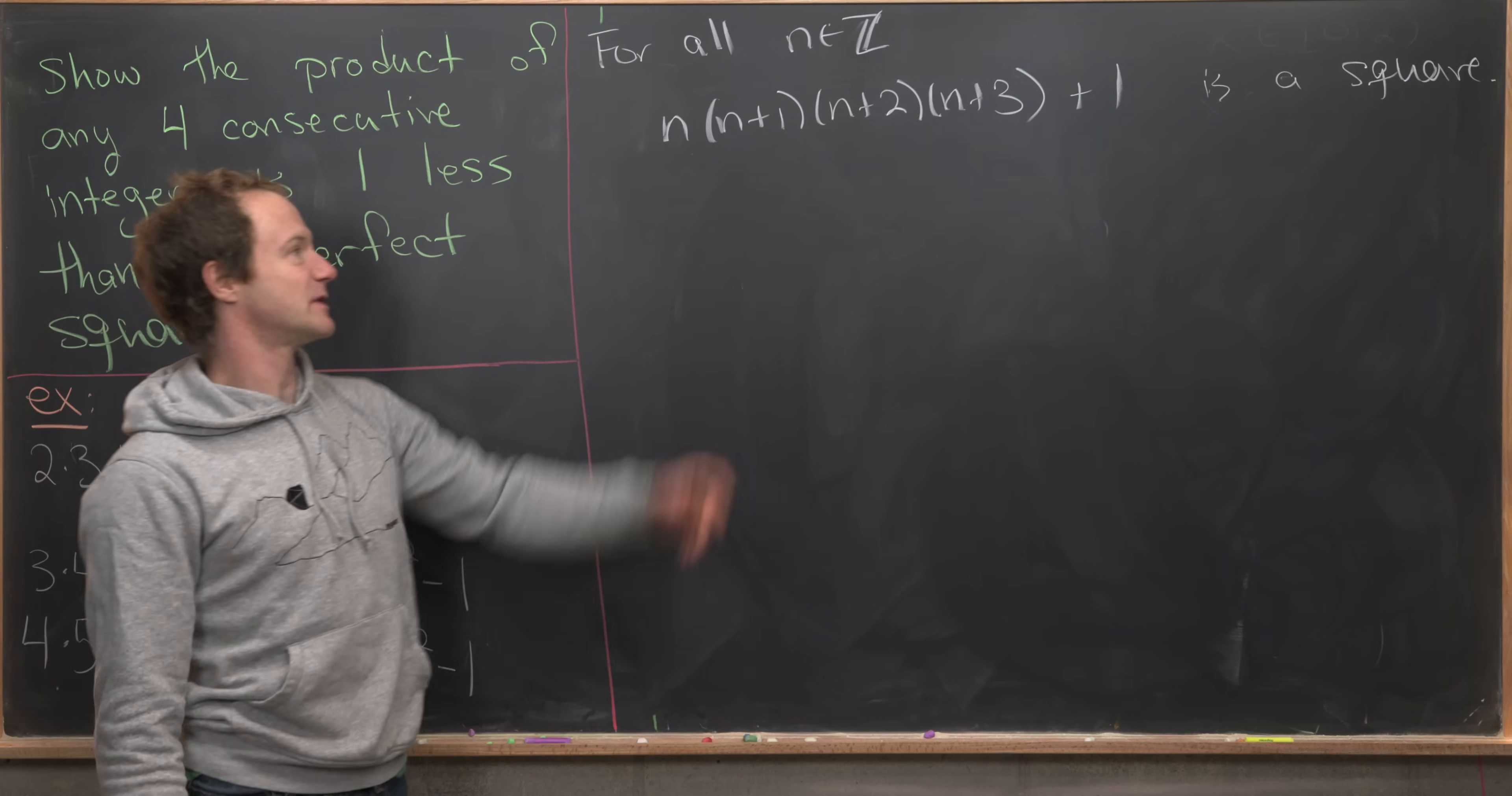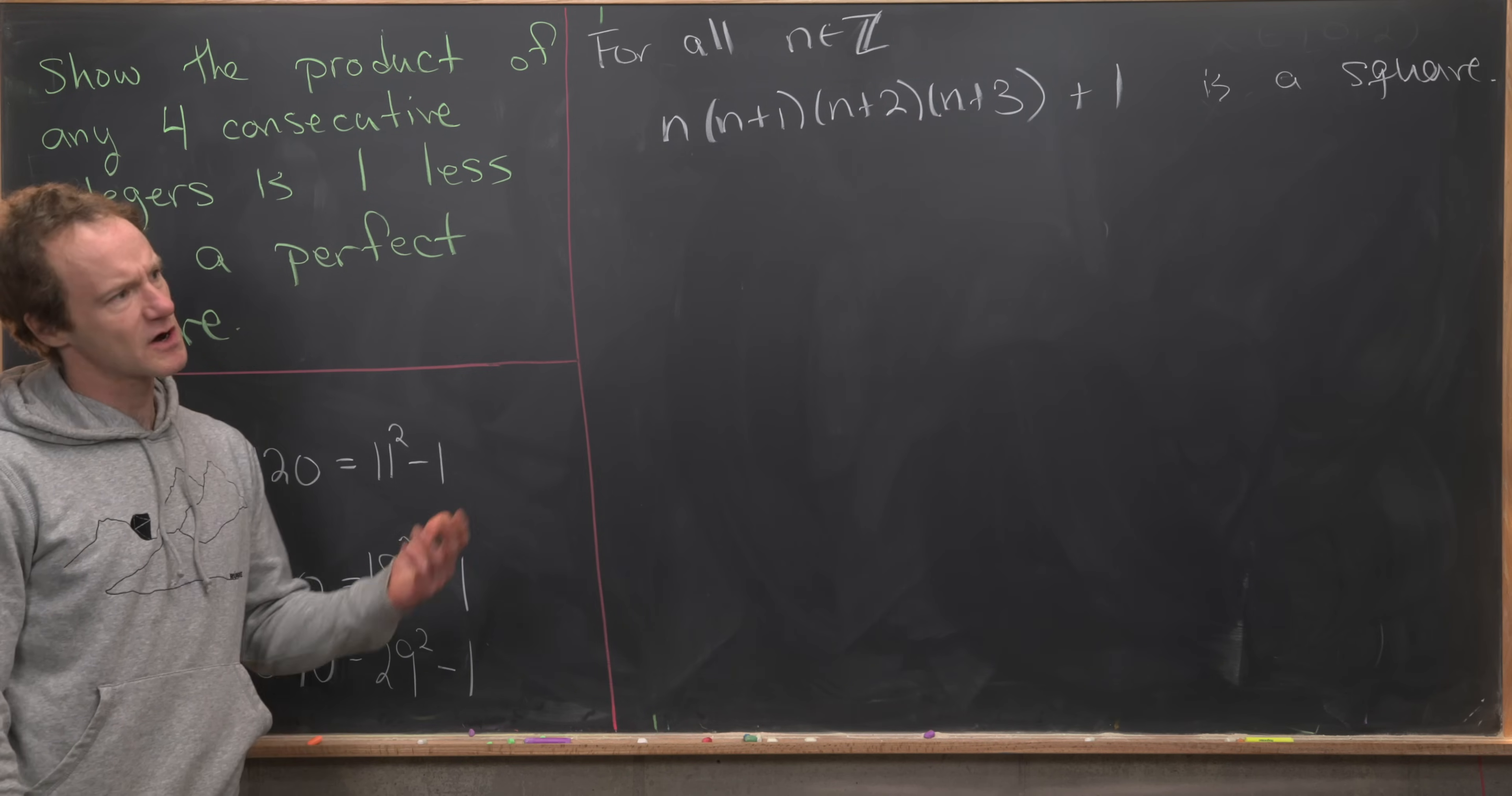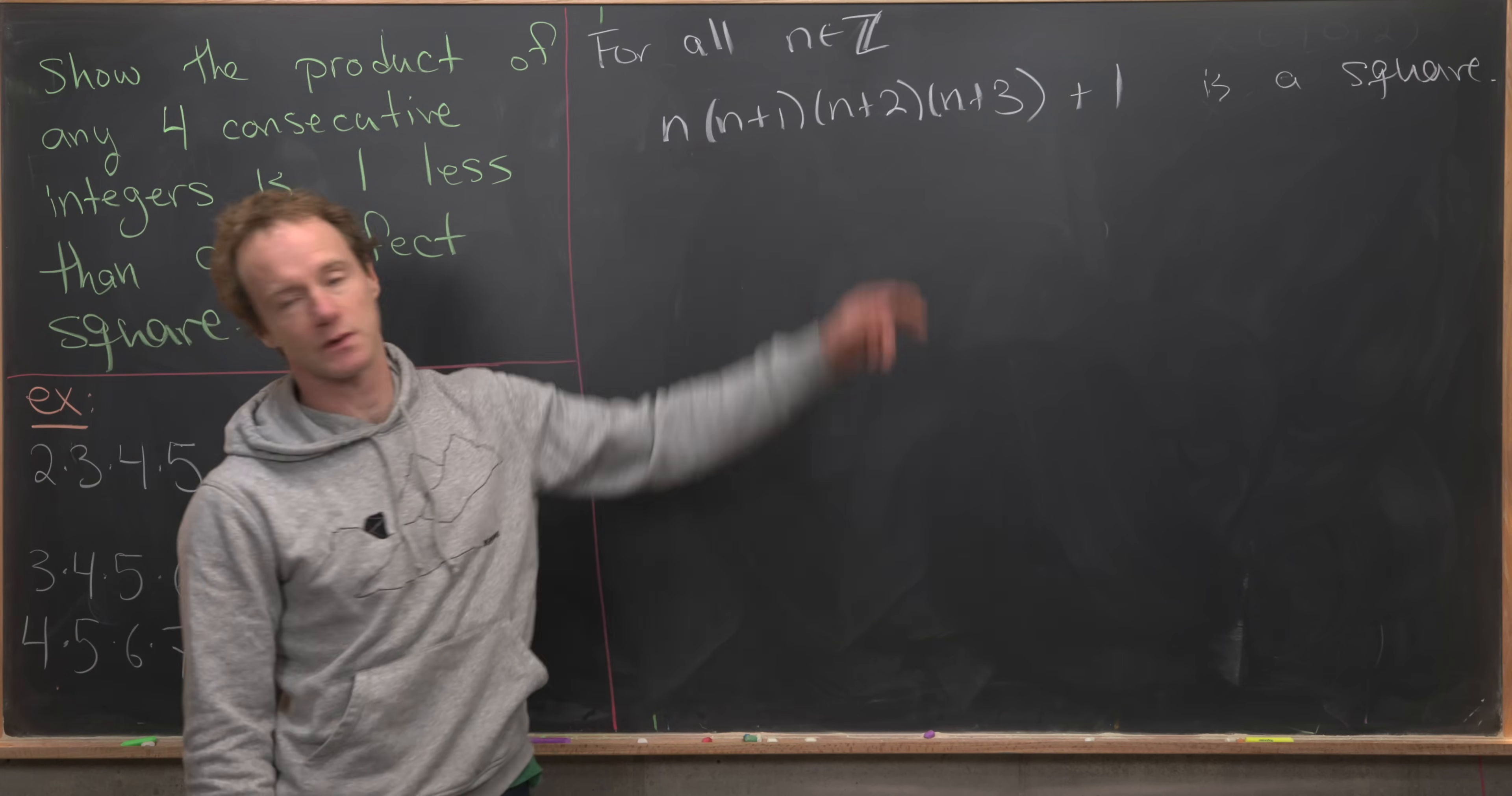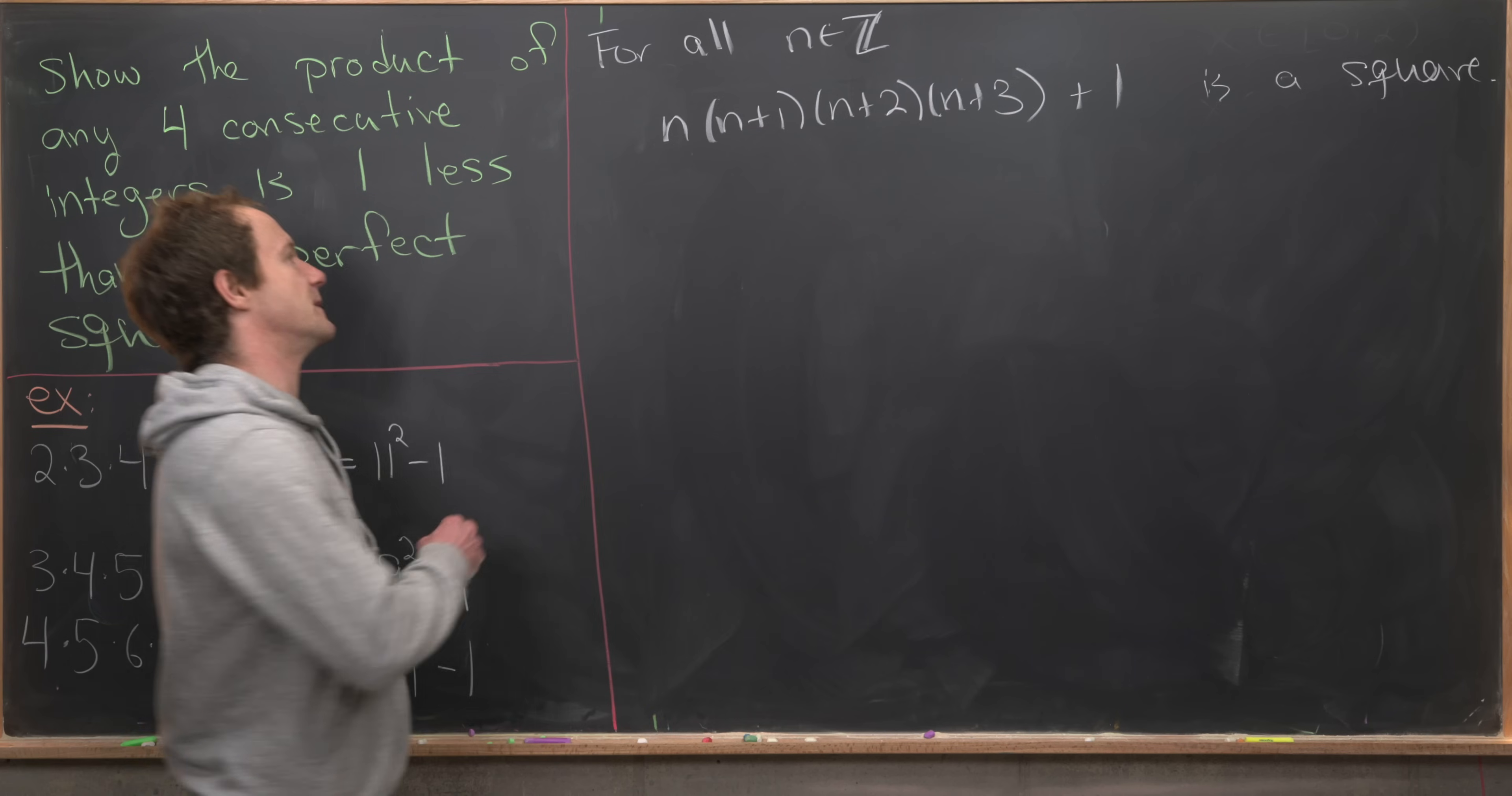And that is I want to symmetrize this product right here. And while there are a couple of ways to make it almost symmetric, you could move this to start at (n-1) times n times (n+1) times (n+2). But we can actually do a little bit better.